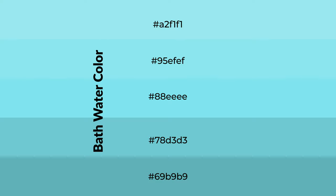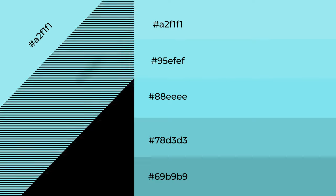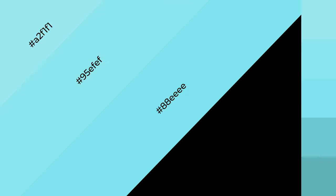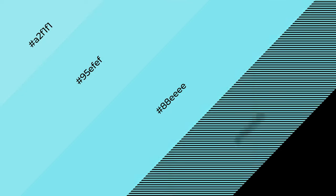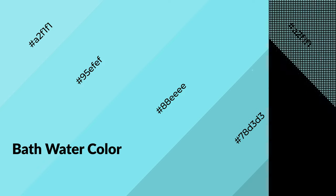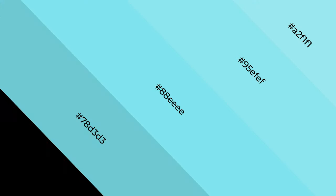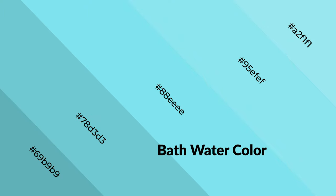To generate shades of a color, we add black to the color. Shades are used in patterns, 3D effects, and layers, and create depth and drama. Bath water is a cool color and it emits calming, serene, soothing, refreshing, spacious, unwinding, peaceful, and relaxed emotions.